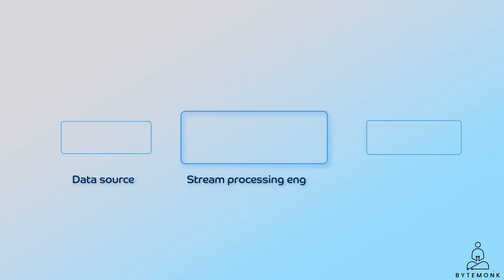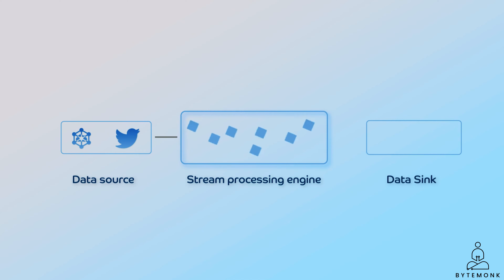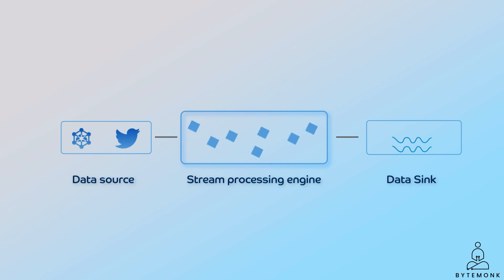A stream processing architecture typically consists of three components: a data source, a stream processing engine, and a data sink. The data source is where the stream data is generated — this could be IoT devices, website click streams, application logs, or social media feeds. The stream processing engine processes the stream data in real-time, applying complex transformations and aggregations, then outputs results to a downstream destination. The data sink is where the processed stream data is stored or processed further, such as a data warehouse, a data lake, or another stream processing application.